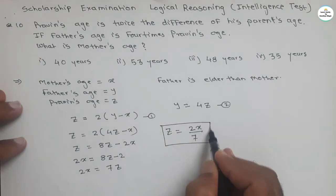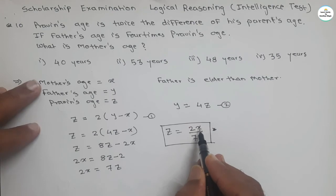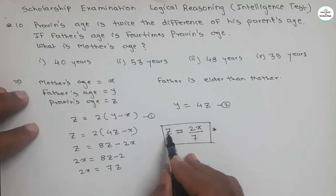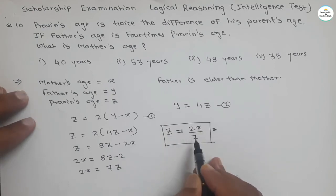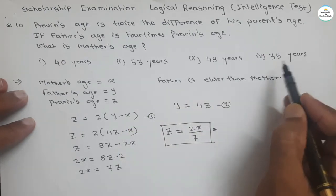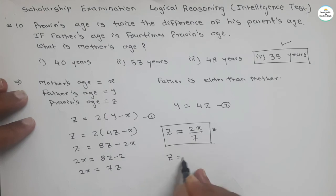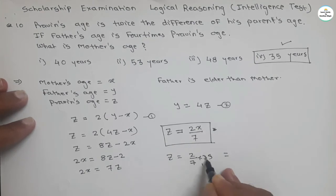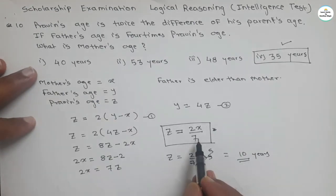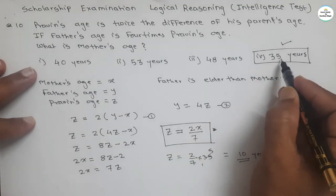This statement is very important: since 7 is in the denominator and X is mother's age, age must always be a whole number. So X must be divisible by 7. From the four options — 40, 53, 48, and 35 years — only 35 is divisible by 7. So 35 is the right answer. Substituting X equals 35: Z equals 2 divided by 7 times 35, giving Praveen's age as 10 years. If we put 40, it is not divisible by 7, so the age would not be a whole number. Therefore X must be 35.